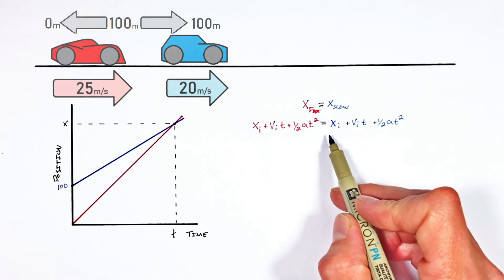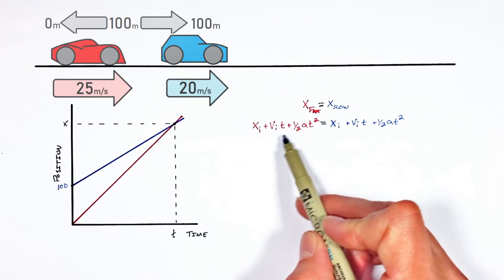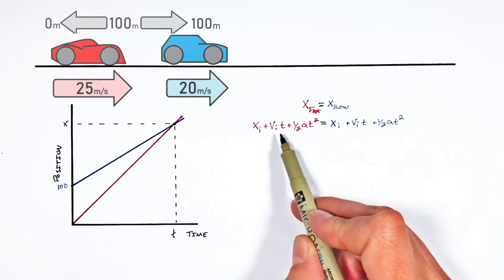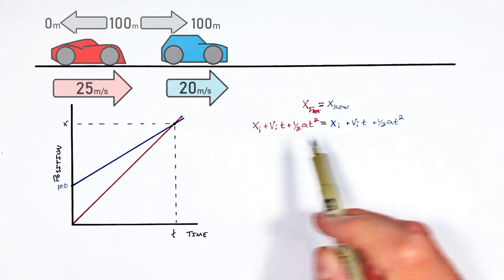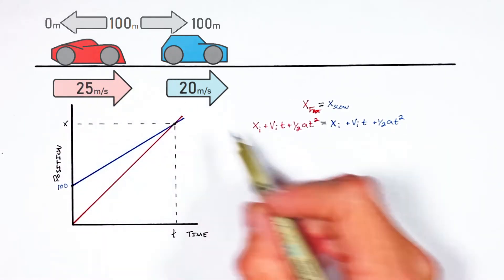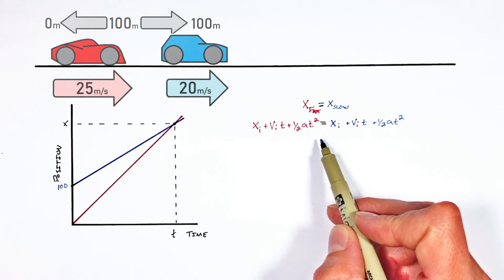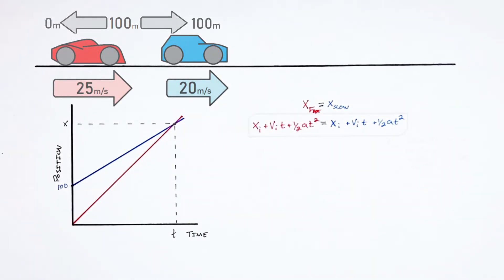Now what we have right here is an incredibly general equality where we simply set one position function equal to another. But we haven't made either of these position functions specific to the vehicles yet. Really this equality is a general form that we can fill out anytime two objects are going to meet.